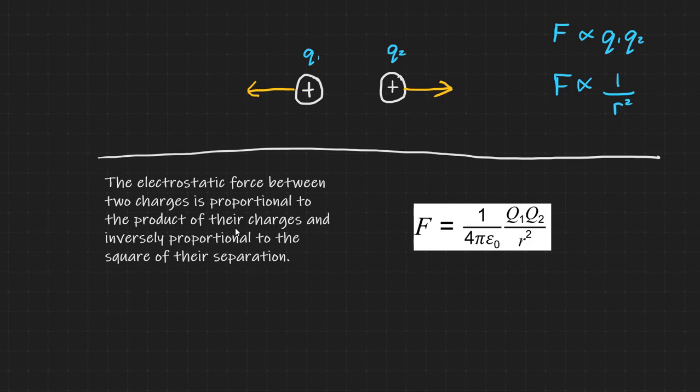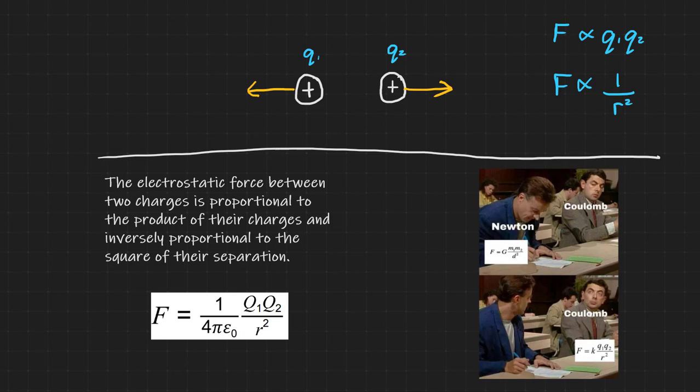Coulomb's law and the associated equation may seem familiar to you. It looks very similar to Newton's law of gravitation. But while Newton's law deals with the relationship between masses in a gravitational field, Coulomb's law represents a very similar relationship between charges in an electric field.